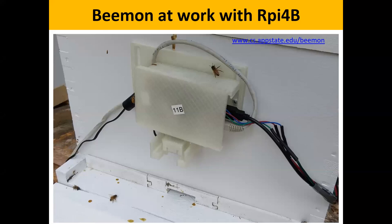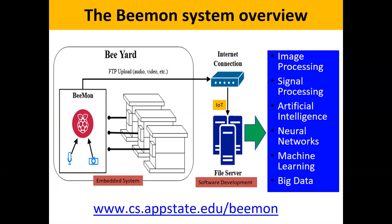That gadget in front of the hive is recording all of these things, and we bring the data to our server where we start analyzing. We listen to the audio and watch the videos through different tools. This is the BEEMON system — the hives are lined up and the monitoring system is placed in front. We do the internet connection; we have an IoT platform that manages the data in and out, and then on the side we do image processing, signal processing, and AI.